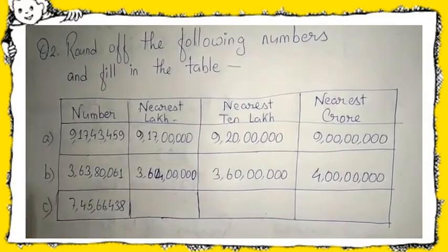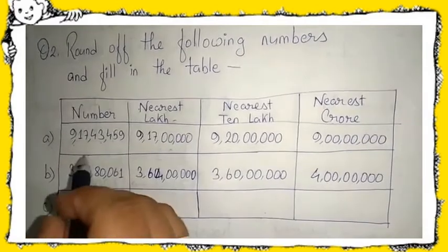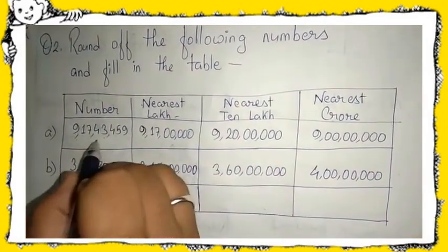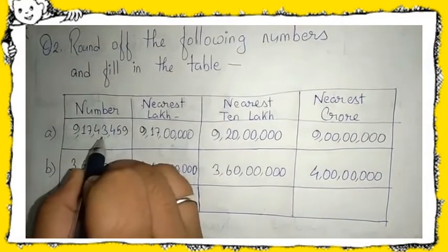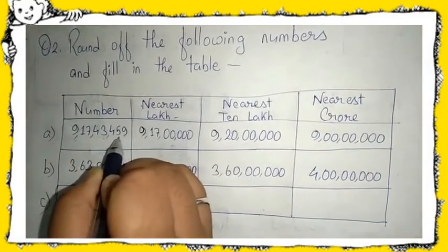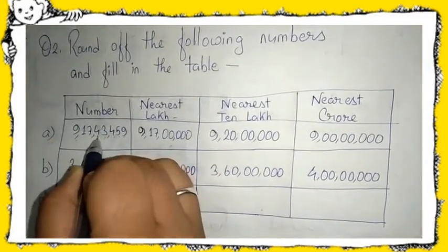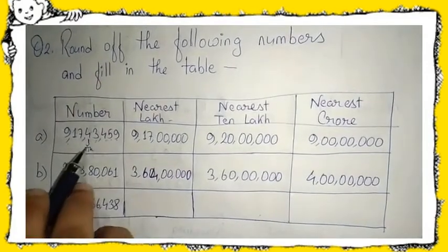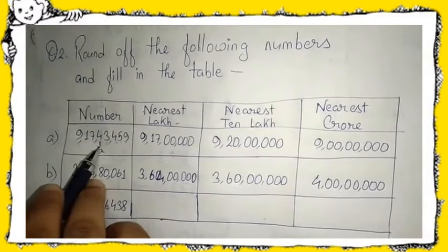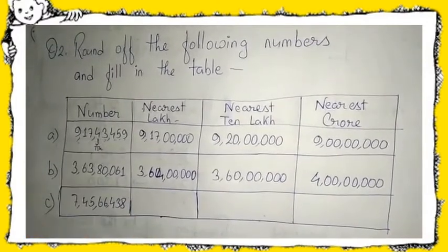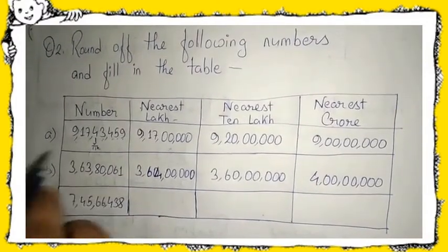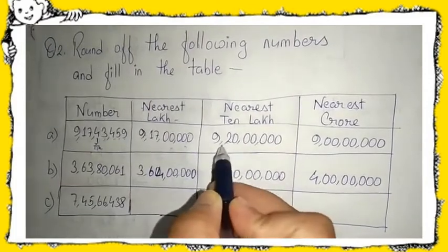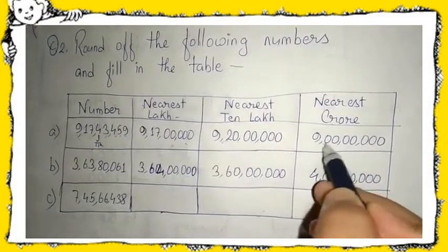For nearest lakh, you have to look at the ten thousands place only. Your ten thousands place is four, which is less than five, so you cannot do anything to the lakh place — you cannot add one. So your answer will be nine crore seventeen lakh. Similarly, for the ten lakh place and nearest crore, you also have to look at the respective places and apply the same rule.